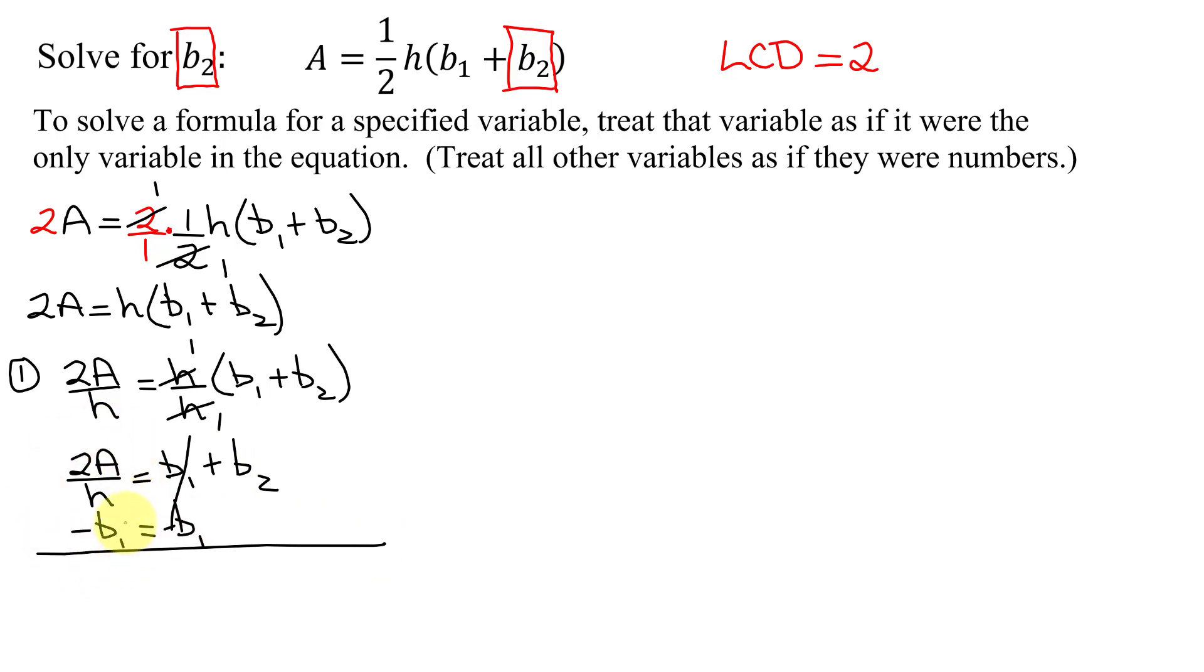On the left-hand side, I have unlike terms, so leave them alone. 2A over h minus b1 equals b2, the variable that I'm trying to solve this formula for.